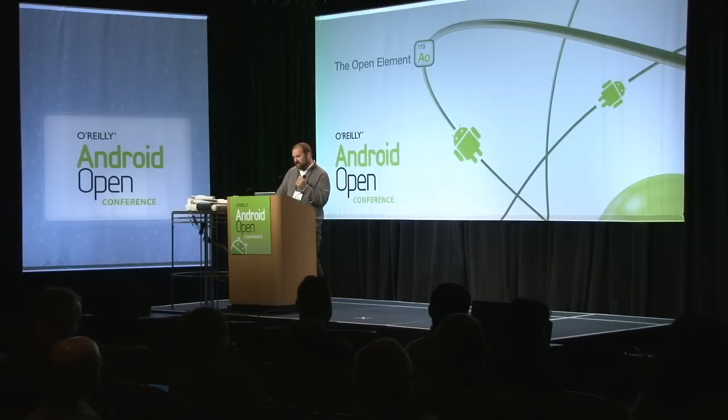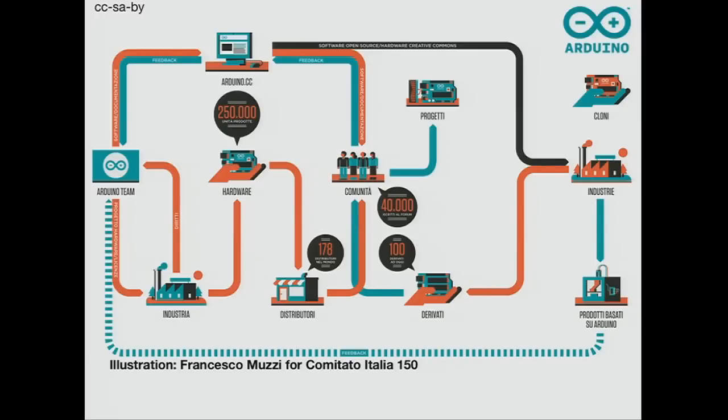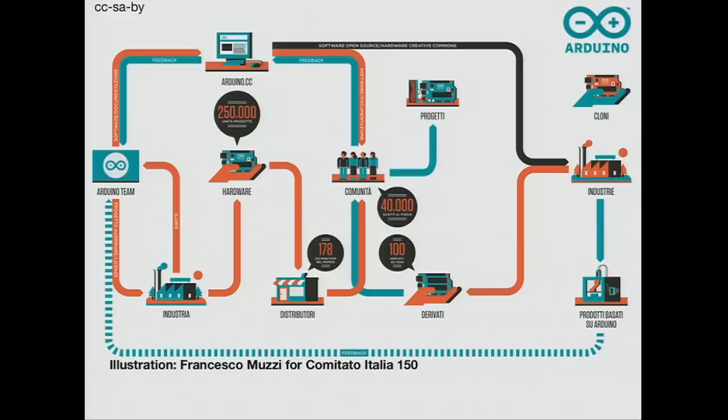Another feature of Arduino is that it's probably the most widespread open source hardware project. This diagram tries to outline the way the system works: essentially the Arduino team designs hardware, releases open source software, releases documentation published with a Creative Commons license. Companies make the hardware and those who license the Arduino brand pay back a royalty to Arduino. There are also people who make products based on Arduino, and clones you can get from eBay — people mostly in China who clone the whole thing regardless of trademarks.